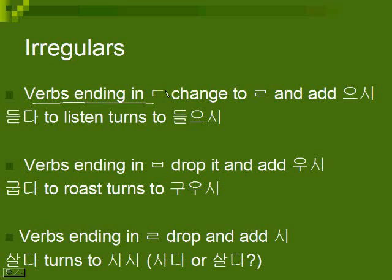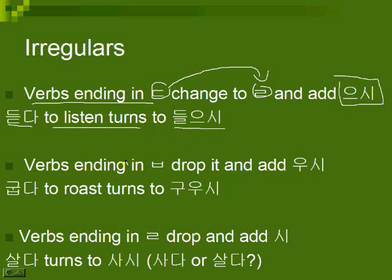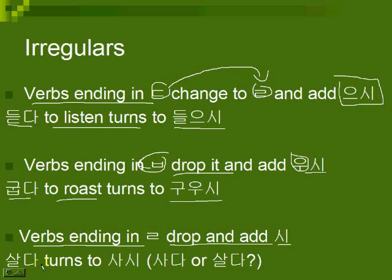For ㄷ irregular verbs — verbs with bases ending in ㄷ — change ㄷ to ㄹ and add 으시. For example, 듣다 to listen turns into 들으시. For verbs ending in ㅂ — most of them, not all, but for now just do all of them since there are very few exceptions — drop ㅂ and add 우시. For example, 굽다 to roast turns into 구우시. For verbs ending in ㄹ, drop it and add 시. 살다 to live turns into 사시.